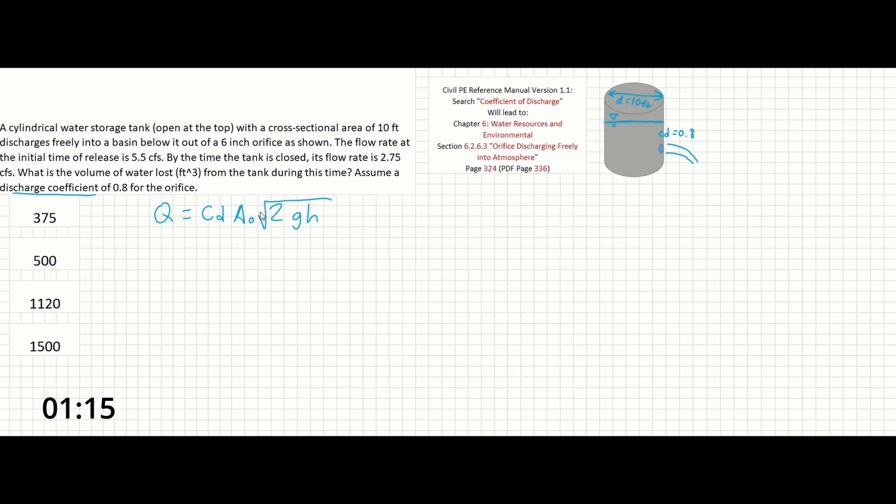If we solve this equation for the height of the water at the initial flow rate and the height of the water at the final flow rate, we will have the total height that the water in the tank dropped by. Then, since we also know the tank diameter, we can calculate the total volume of water that was lost. So let's get started.